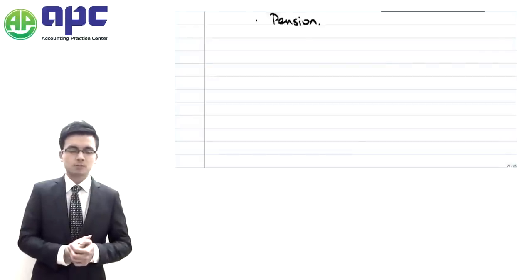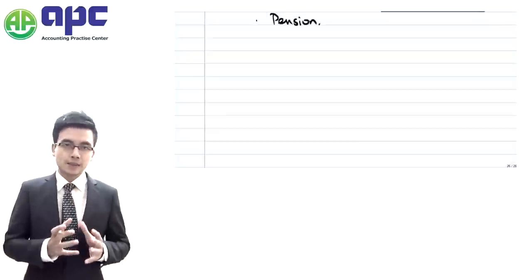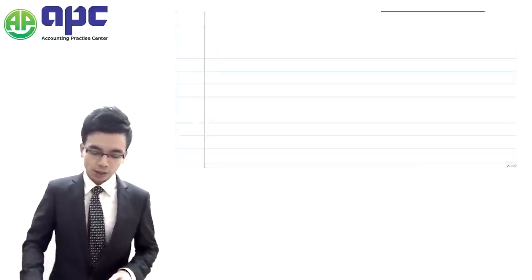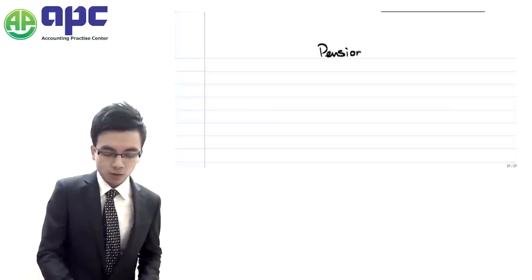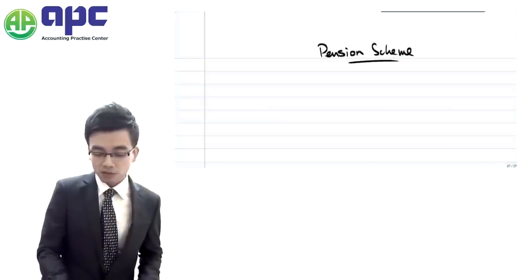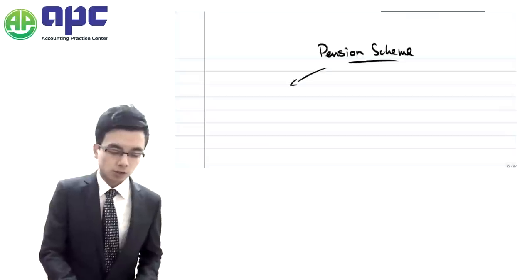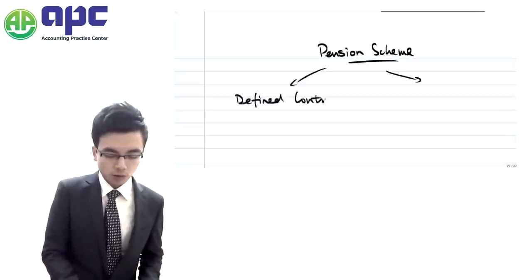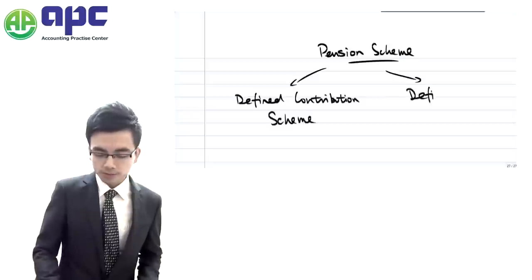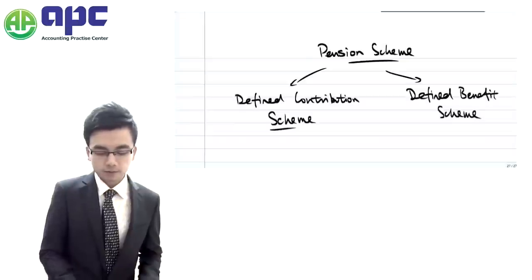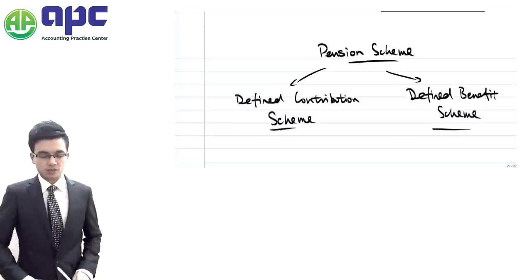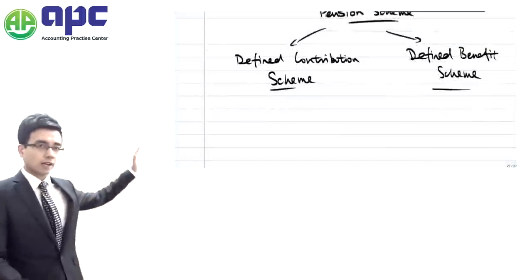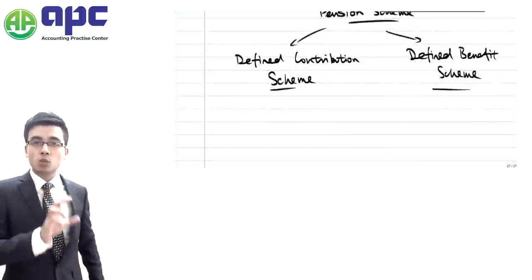So from the accountant's point of view, we have to make sure that the disclosure of the pension — especially for assets versus liabilities — is absolutely correct. If this is not the case, it will scare the shareholders. So before we dive into the detailed accounting of the pension, what we need to understand is what types of pension schemes exist in the marketplace. Basically, we have two types of pension scheme.